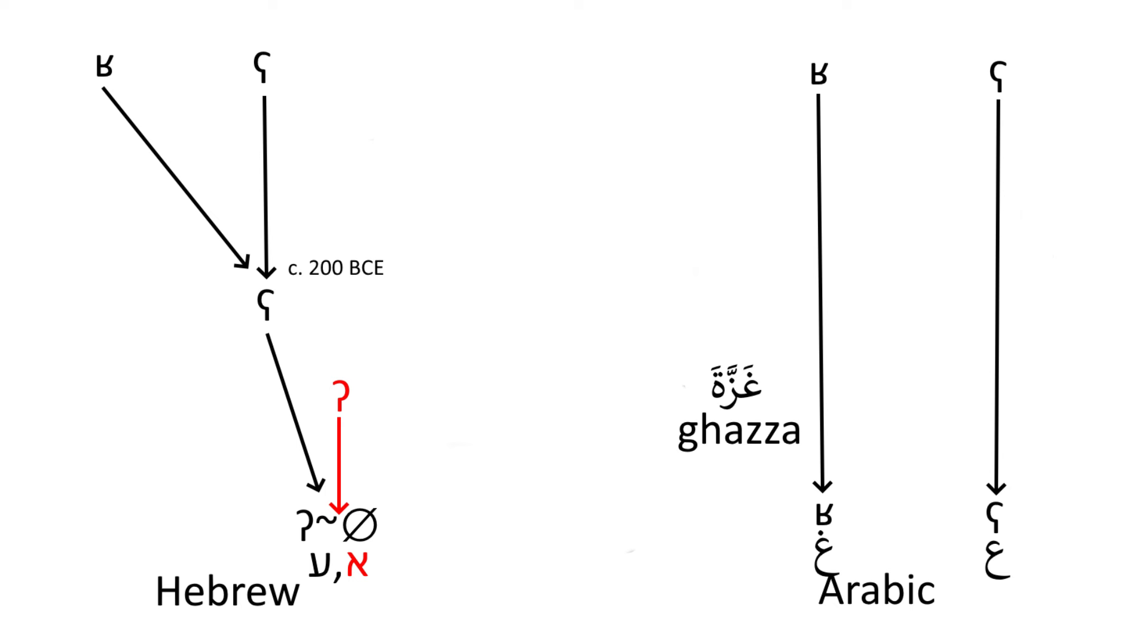Arabic simply retained these two sounds completely, thus Azza is still pronounced Ġazza. Transcribed into European languages as Gaza, while modern Hebrew speakers refer to the city as Azza.